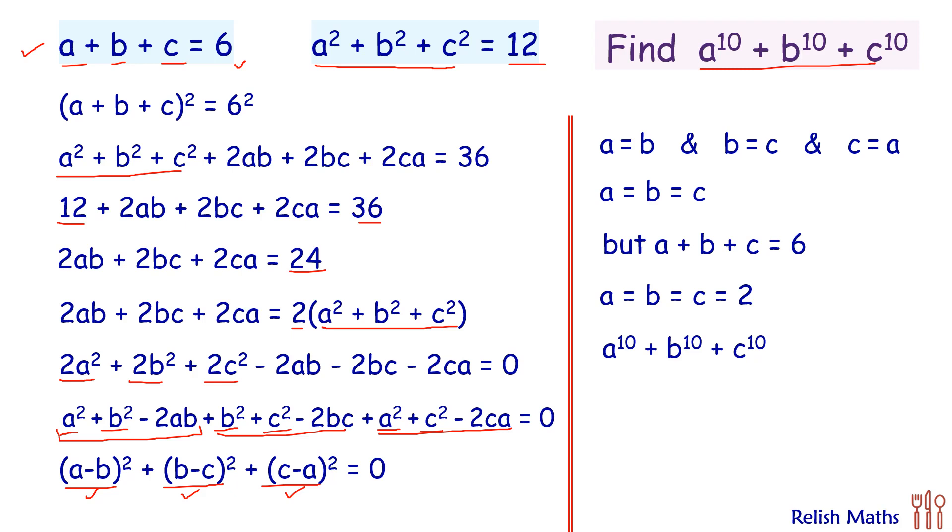Now this value which we have to find will be nothing but 3 times 2 raised to power 10. 2 raised to power 10 is 1024, so our answer is 3072. I hope you enjoyed the solution. I will see you in the next video. Till then, take care, bye bye.